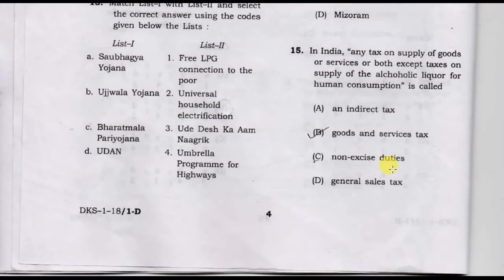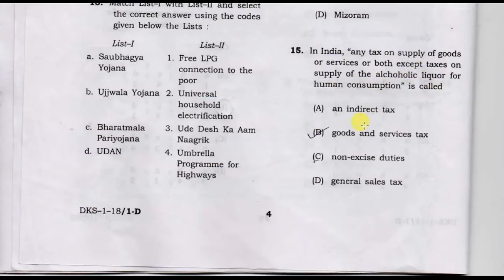In India, any tax on supply of goods and services, except taxes on supply of alcoholic liquor for human consumption, is called GST — Goods and Services Tax. Option B is the correct answer.